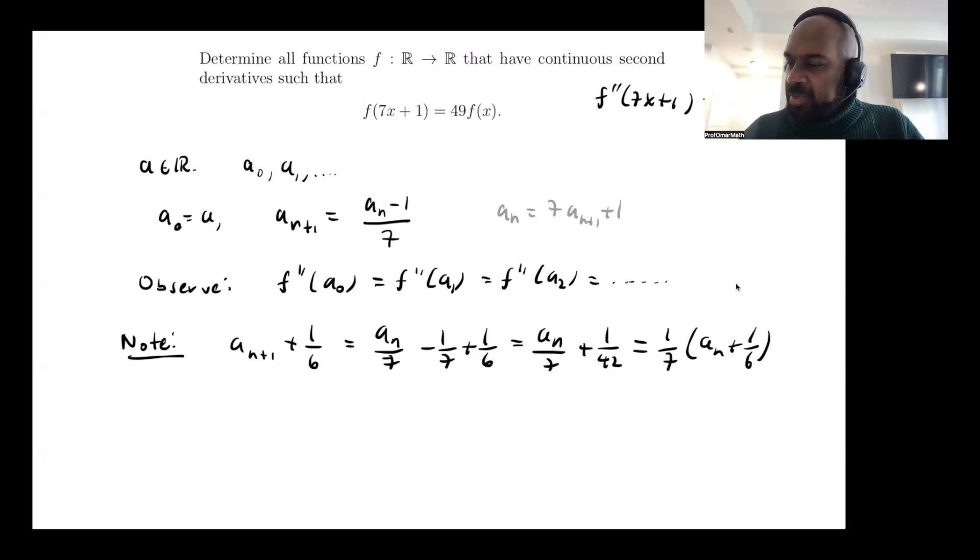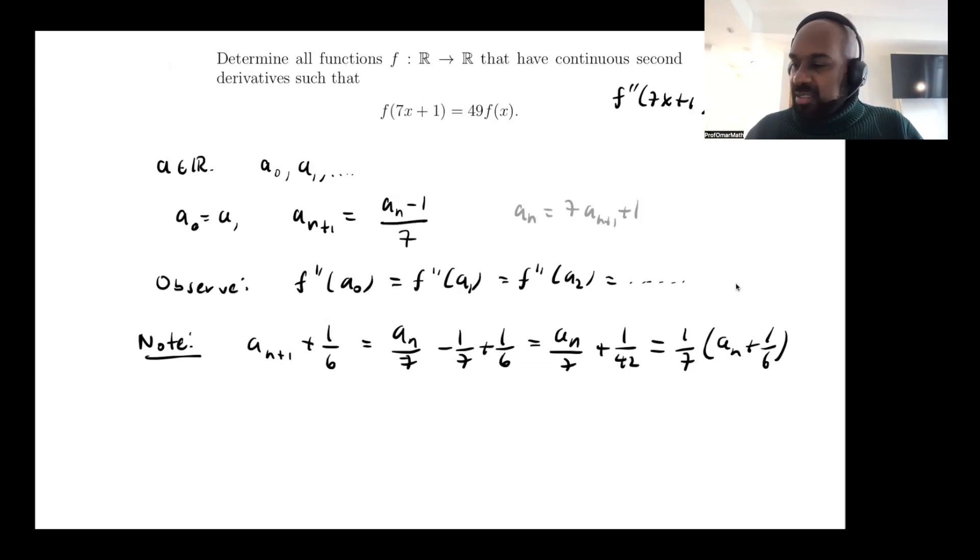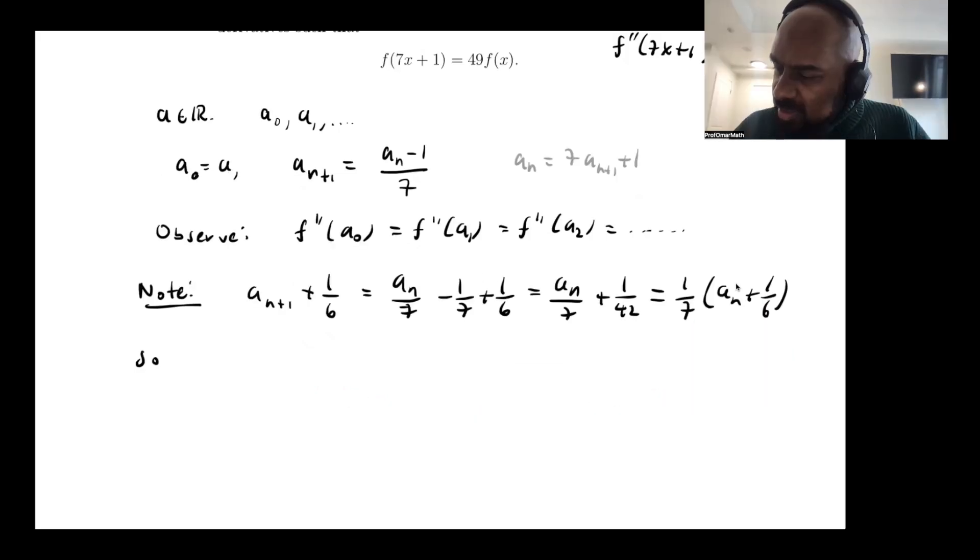Okay, so what's happening here is we notice if we add a sixth to a_{n+1}, we actually get a seventh of a_n plus 1/6. So if we instead looked at the sequence where we added a sixth to every term in our original sequence, we actually get a sequence that's forced to go to 0, because we start with something, and then the next thing is a seventh times that. So the sequence a_n plus 1/6 actually converges to 0, which implies the sequence a_n itself converges to negative 1/6.